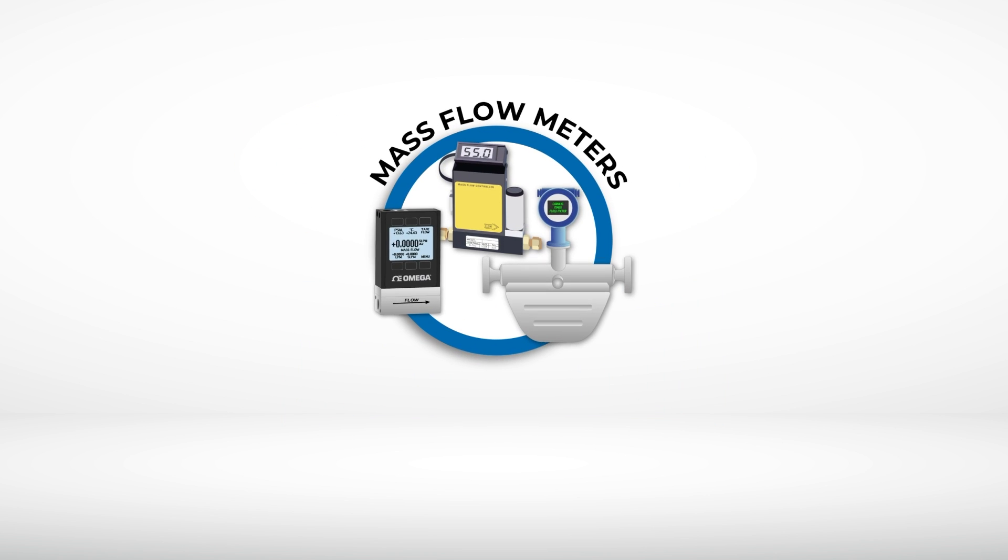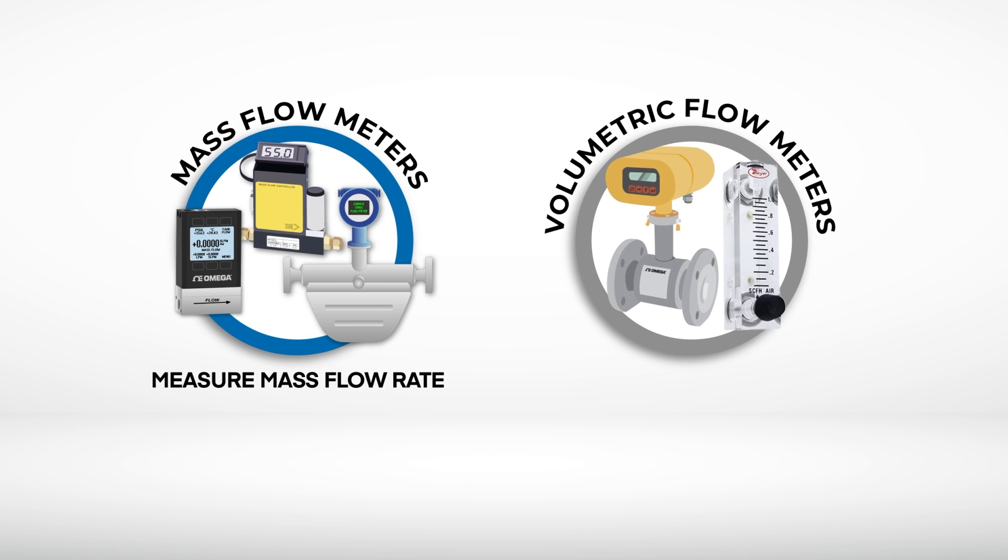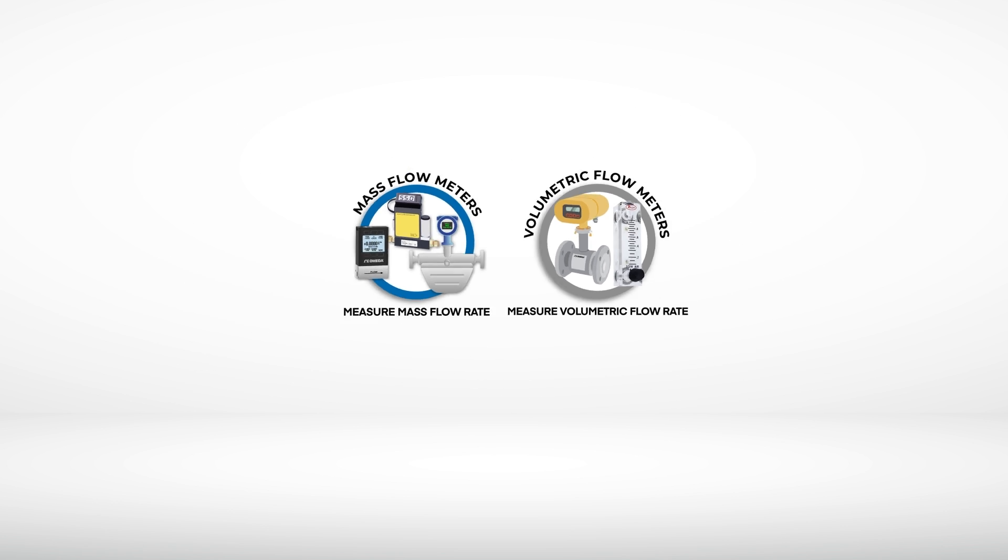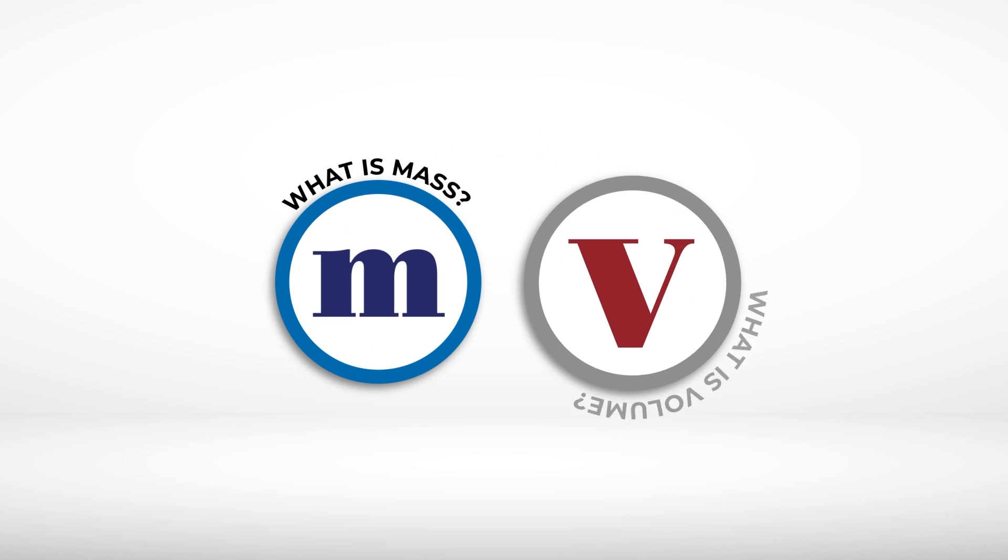Mass flow meters measure the mass flow rate, and volumetric flow meters measure the volumetric flow rate. But what does that mean? Well, to understand the difference between the two, we need to discuss what is mass and what is volume.